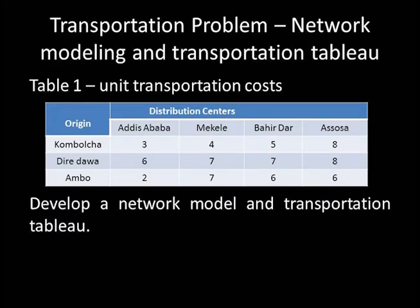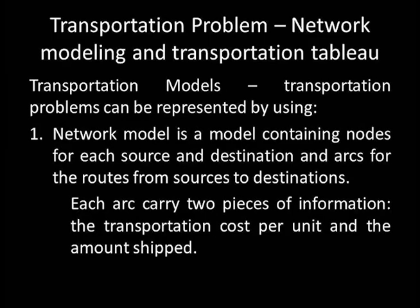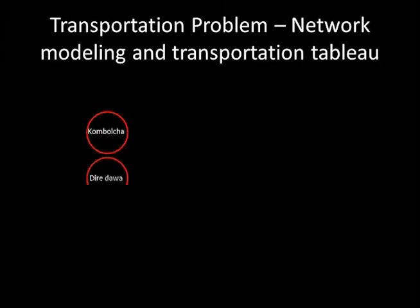The question is to develop a network model and transportation table. First, let's develop a network model. As discussed, sources and destinations are represented by nodes. In a network model, source nodes are arranged vertically on the left-hand margin. We have three sources — Kombolcha, Dire Dawa, and Ambo — arranged vertically from top to bottom. The supply from each source is written to the left of the source node, though some authors place it on the right. For our discussion, we will use the left-hand margin.